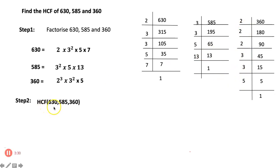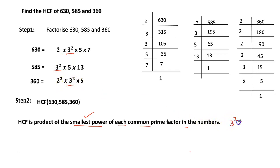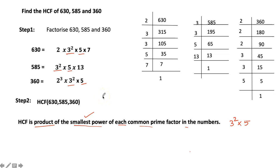Step 2 is finding the HCF. HCF is the product of the smallest power of each common prime factor. The common prime factors are 3 and 5. The smallest power of 3 across all three numbers is 3 squared, and the smallest power of 5 is 5 to the power 1. So HCF of 630, 585, and 360 = 3² × 5 = 9 × 5 = 45.